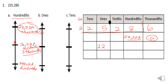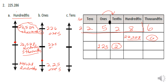The second problem has us rounding to the ones place. Reading the number, it ends up being two hundred twenty-five ones and two tenths. On our vertical number line, the bottom is two hundred twenty-five ones and the top is two hundred twenty-six ones. Looking at the tenths place, we had two tenths, which falls right about here. Since five tenths would be the center and two tenths is below that, our number is below the center line, so we round to two hundred and twenty-five ones.